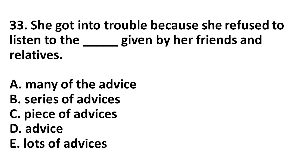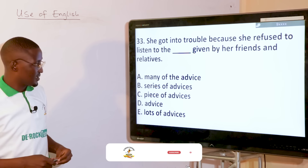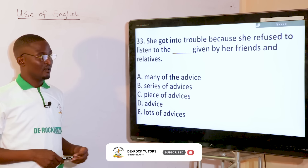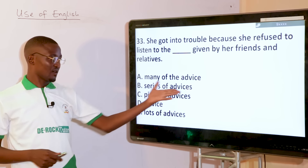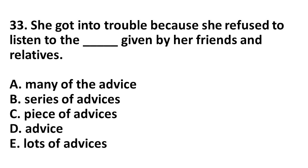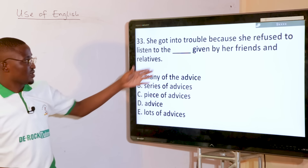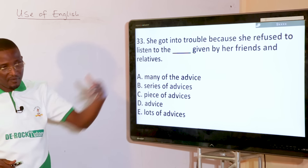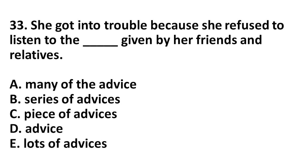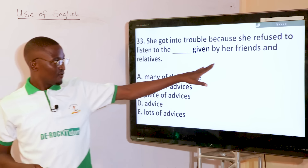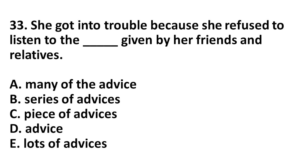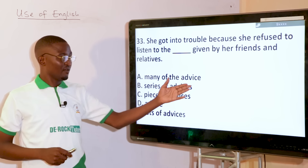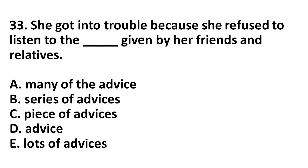She got into trouble because she refused to listen to the dash given by her friends and relatives. Advice should not take S — it is an uncountable noun. Pieces of advice or lots of advice would be out of point. She refused to listen to the advice given by her friends and relatives. Note that advice is still pronounced the same way; the version with S-E is mostly used as a verb in British English while the noun form is advice.